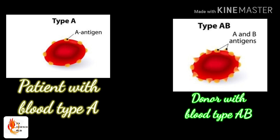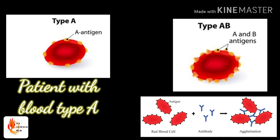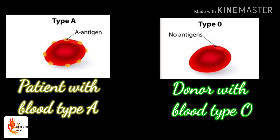Think about transfusing blood group AB — that is also not possible. Why? Even though that blood consists of antigen A, it also consists of antigen B. So the patient's body still considers antigen B as a foreign antigen and will still produce antibodies against it. Now think about transfusing blood group O. Blood group O doesn't have antigen A or antigen B, so we can consider it as zero. By adding this into the patient, there will be no issue because there is no antigen and the immune system will not be alerted.